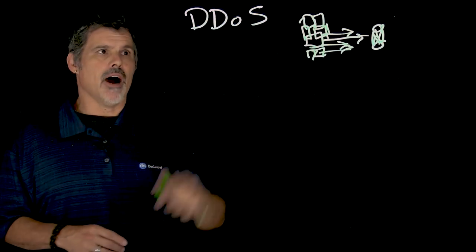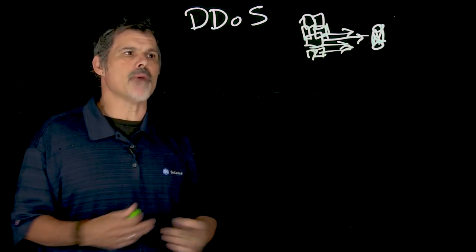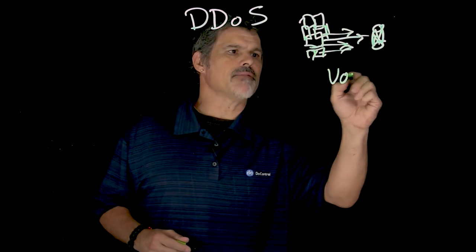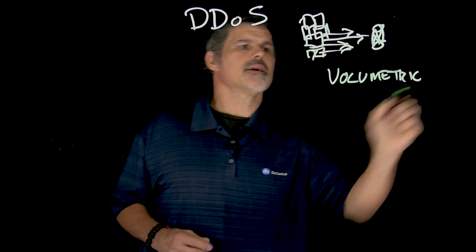Now, there are three kinds of DDoS attacks. The first one, and you're probably most familiar with, is what's called a volumetric attack.